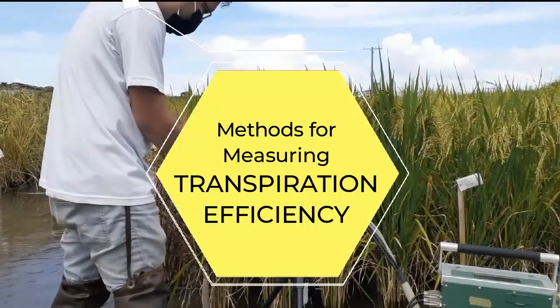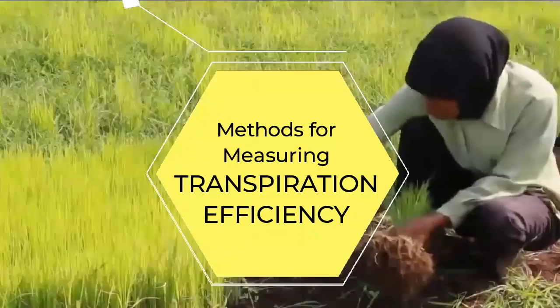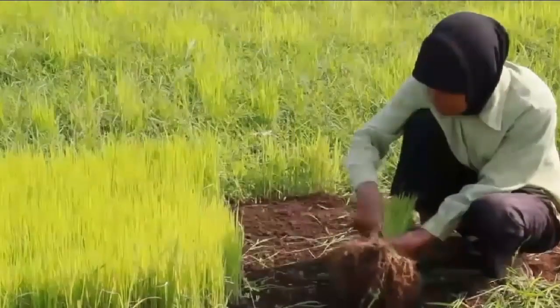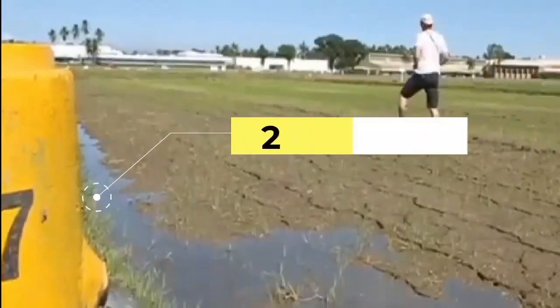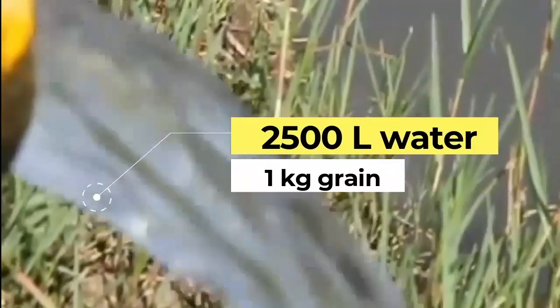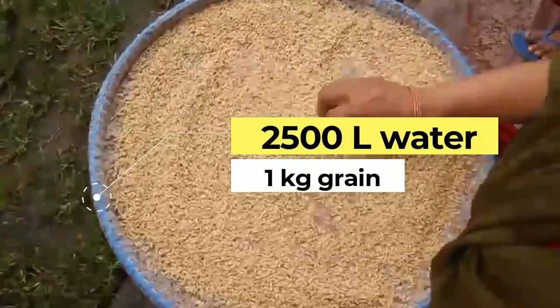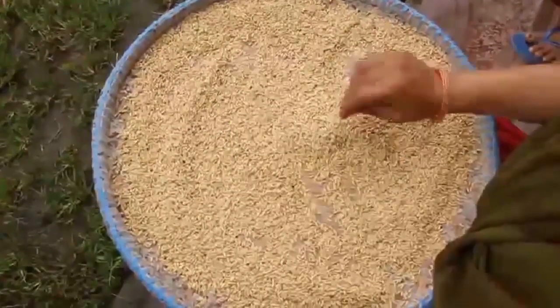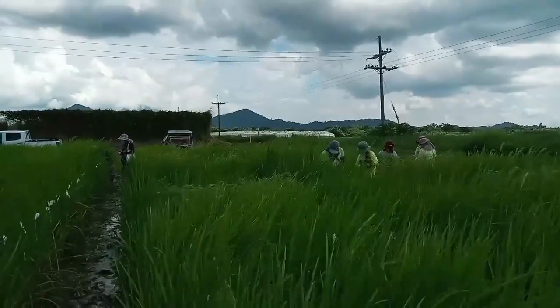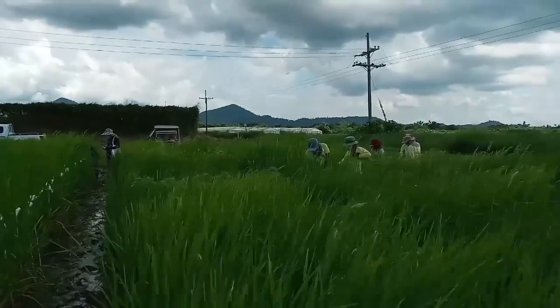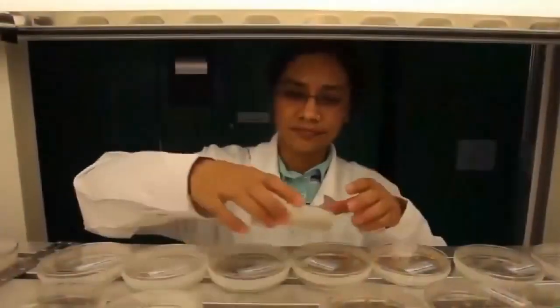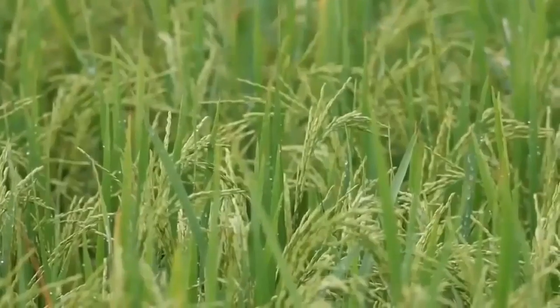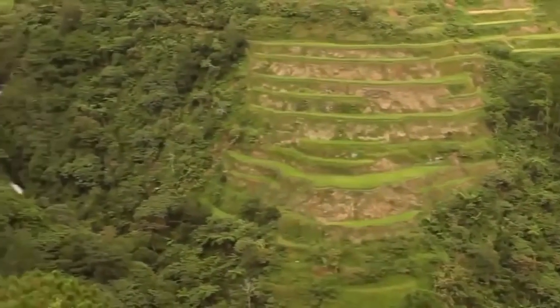Methods for Measuring Transpiration Efficiency. Conventional transplanted rice production has been estimated to require on average 2,500 liters of water to produce 1 kg of grain. This water requirement includes the demands of evapotranspiration as well as seepage and percolation from the soil. Increasing the water use efficiency of rice crops will help address the expected future constraints in water availability.